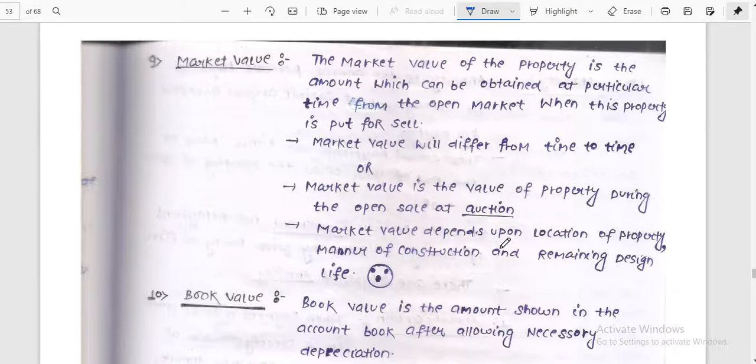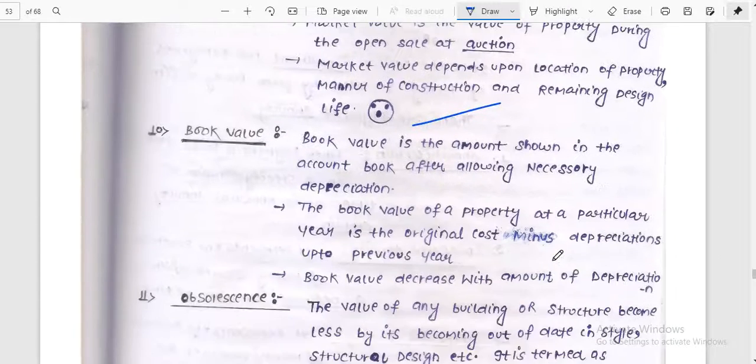Market value. In the form of the building, the value of the property is the amount which can be obtained at a particular time from its open market when this property is put for sale. Market value will differ from time to time. Market value is the value of the property during the open source. Market value depends on location of property, manner of construction, and remaining design life.